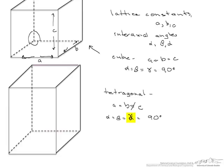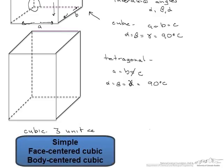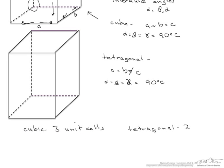So each system can have more than one unit cell. For example, a cubic system can have three types of unit cells: simple, face centered cubic, and body centered cubic. The tetragonal system has two unit cells.